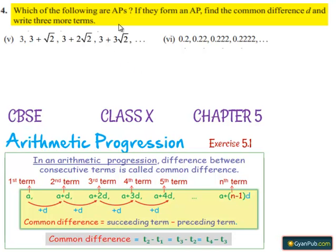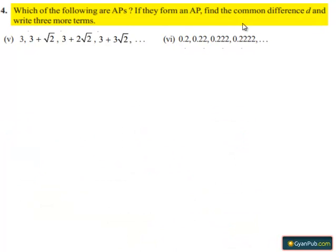Coming to the fourth question: which of the following are arithmetic progressions? If they form an arithmetic progression, find the common difference d and write three more terms. Now, moving on to the solution for the fifth bit.